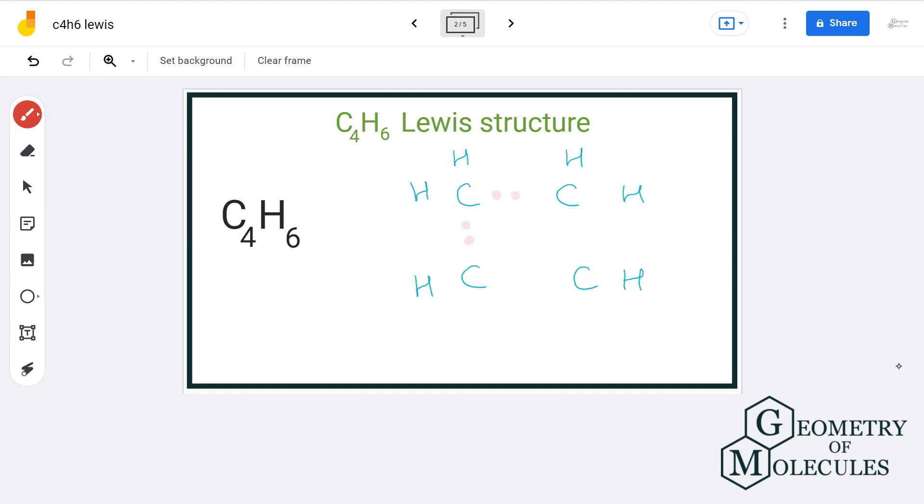After doing that we will place electron pair in between each atom for bond formation. Now these two carbon atoms here need two more electrons for complete octet and we are left with two more electrons, so we'll put the electron pair here. This is the final structure and the name of this compound is cyclobutene.